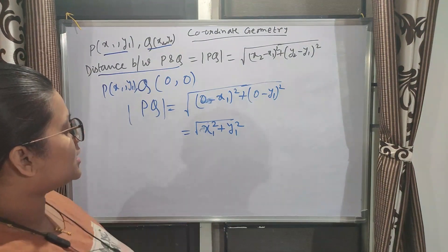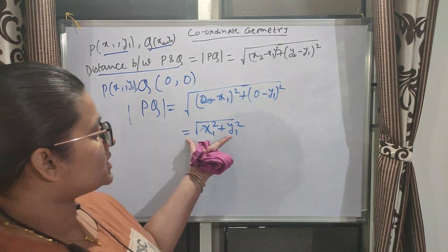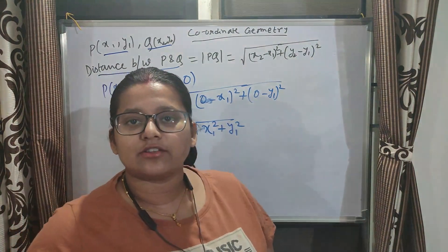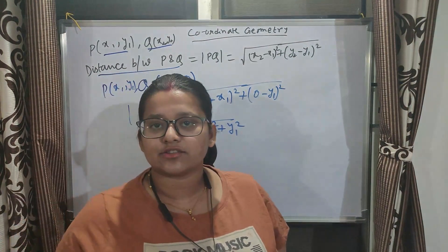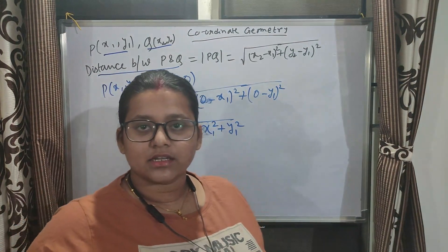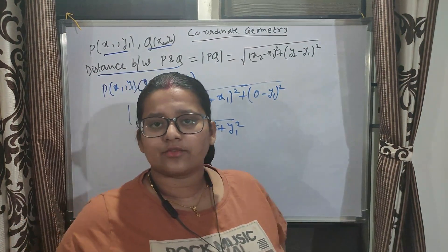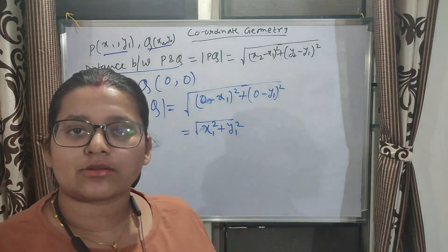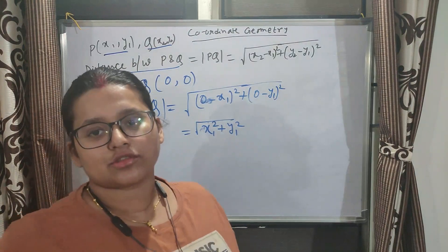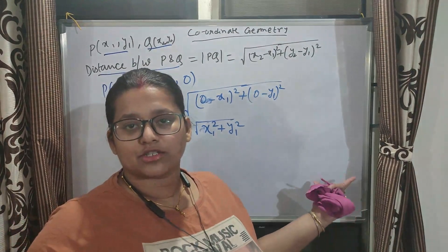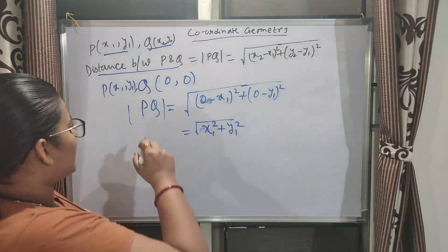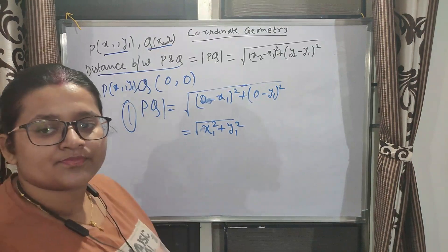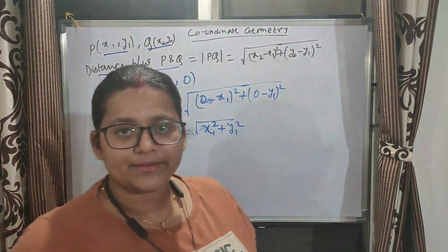One more thing: since there is a square root, plus or minus values will come. But distance cannot be negative, so we always take the positive value. That is why we put the modulus sign.